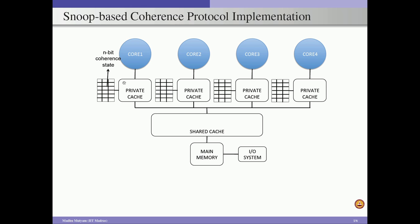If you are considering a 4-state cache coherency protocol, then we are going to have 2-bit information associated with each of the blocks present in this private cache. Given this multi-core system, when we want to implement a snoop-based cache coherency protocol, whenever a core wants to update or read some data and finds a miss in its private cache, it is going to place a transaction on the bus.